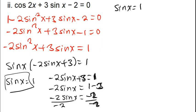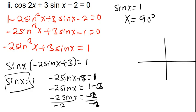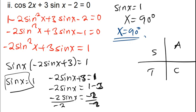Since sinx = 1, x = 90 degrees. This value is positive, so sin is positive. Using CAST, sin is positive in the first and second quadrant. In the first quadrant x = 90°, and in the second quadrant: 180 minus 90 = 90°. So the only solution is x = 90 degrees.